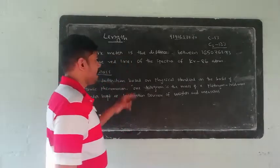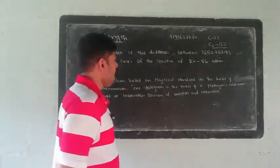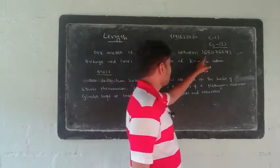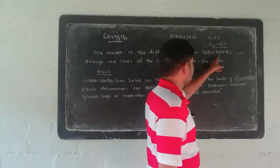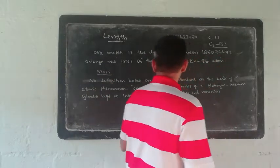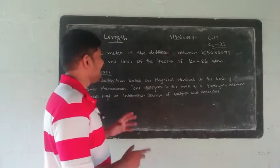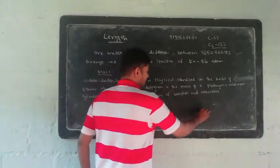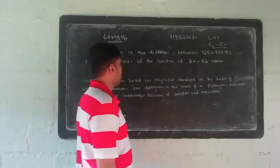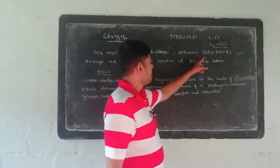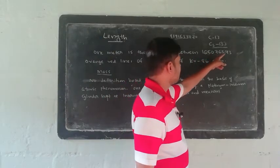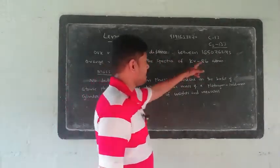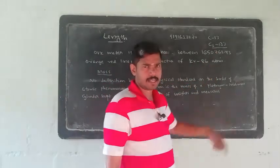Those orange-red lines — 1,650,763.73 number of orange-red spectral lines. The distance corresponding to these lines is 1 meter. 1 meter is the distance of 1,650,763.73 orange-red lines of the spectra of the Krypton-86 atom. Cs-133 is used to define 1 second, and Krypton-86 is used to define 1 meter.